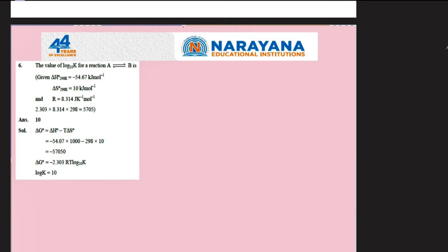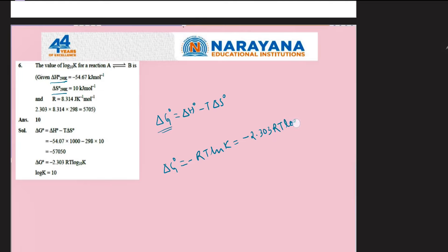This question is from thermodynamics of equilibrium — we have to calculate the value of log K. Delta H and delta S are given. We apply ΔG° = ΔH° - T·ΔS° to find ΔG°, then use ΔG° = -RT·ln K, which simplifies to ΔG° = -2.303·RT·log K. Putting in the values, log K comes out to be 10. The answer is 10.